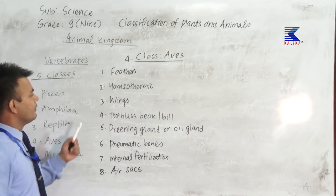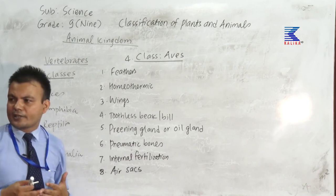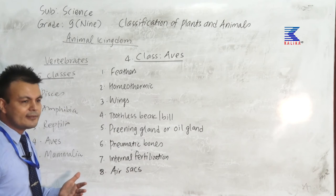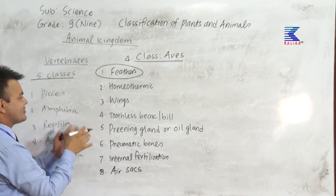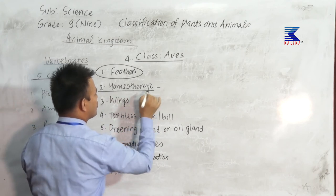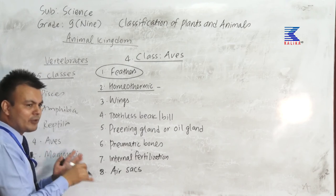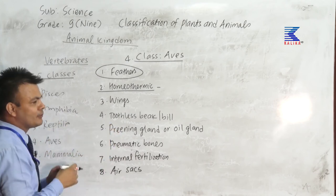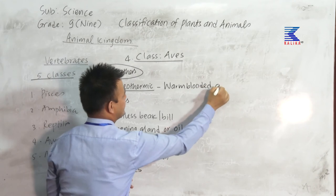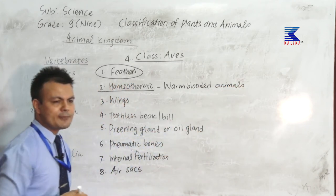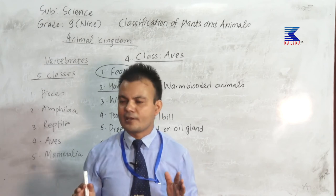The body of Aves is covered with feathers — feathers are not found in any other class. They are homeothermic. Cold-blooded animals are called poikilothermic, but homeothermic means warm-blooded animals. Warm-blooded animals are those in which the body temperature remains constant — it does not change according to environmental temperature. For example, if the environmental temperature is 20 degrees Celsius, the body temperature remains the same.